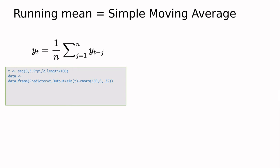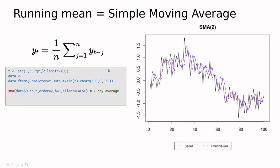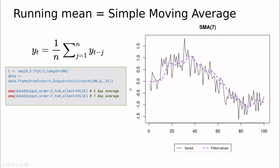Let's do this in R. We define a function as the sine of t and add some noise — so you have this rough variability around the sine. I'm going to use the SMA function, introducing the order parameter, where order 2 is the value of n — the number of previous points used. The h parameter is related to prediction, so forget about that. With order 2 the smoothed line is still noisy but with fewer bumps. If I increase to 7 points, the line is smoother, and at 14 points I get an even smoother line.